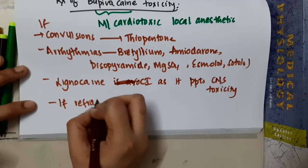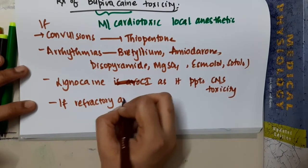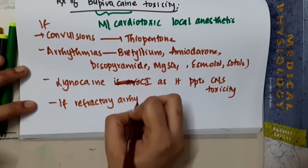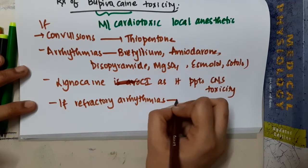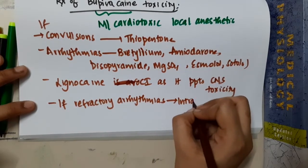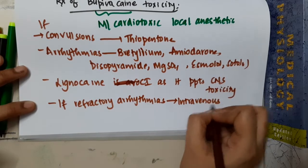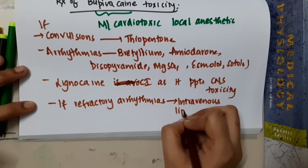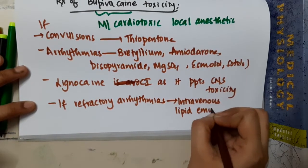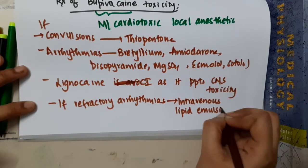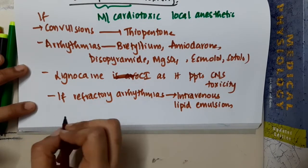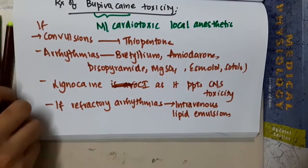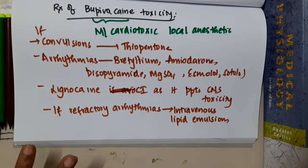If there are refractory arrhythmias, intravenous lipid emulsions are given. These are the treatments of bupivacaine toxicity.